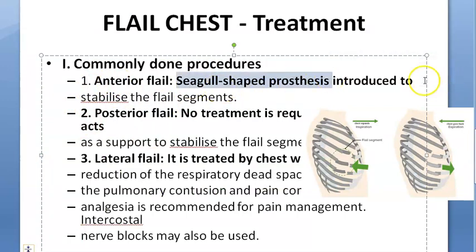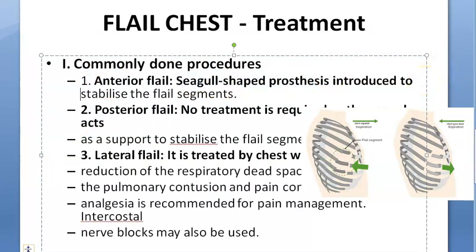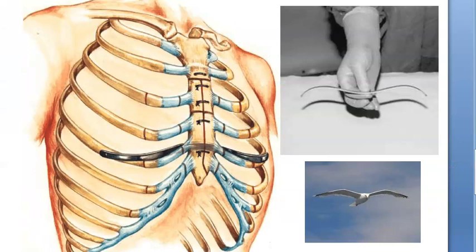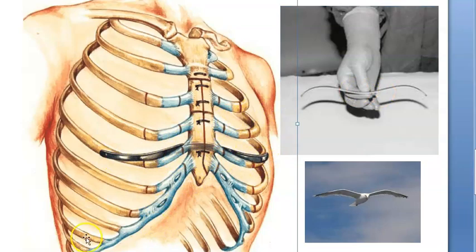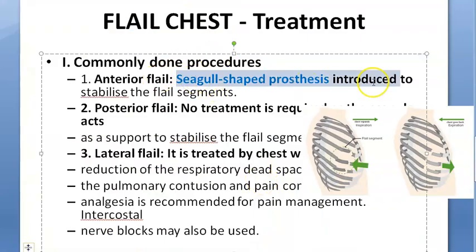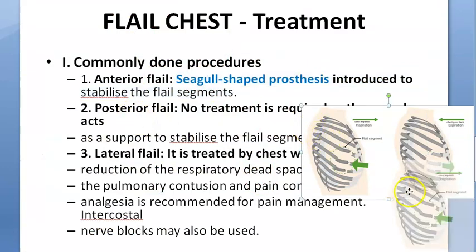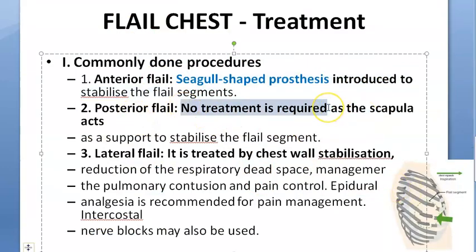Now for treatment. Anterior flail chest is treated with a seagull-shaped prosthesis introduced to stabilize the flail segments. The prosthesis is seagull wing-shaped — it's placed to stabilize the anterior chest. This is the treatment for anterior flail chest.